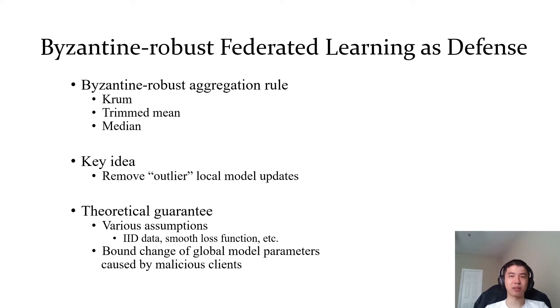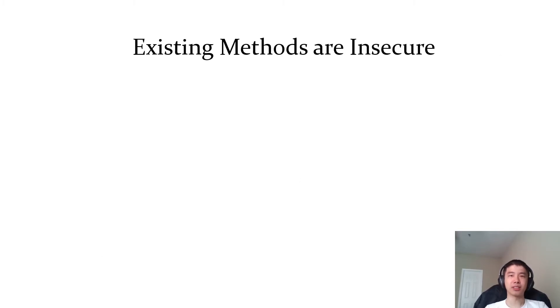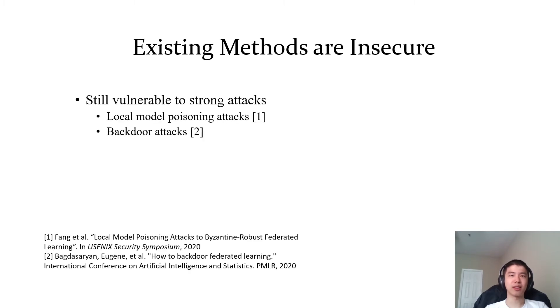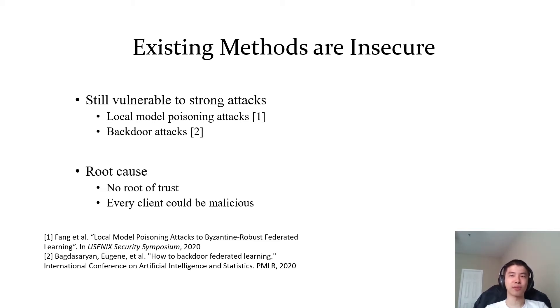However, the existing methods are insecure. Several works have shown that existing Byzantine-robust methods are still vulnerable to strong attacks, like local model poisoning attacks and backdoor attacks. The root cause of the insecurity of federated learning is that there is no root of trust — in particular, from the server's perspective, every client could be malicious.